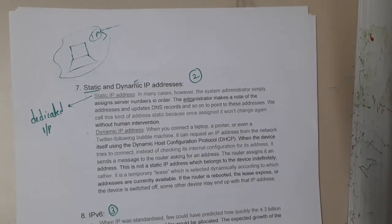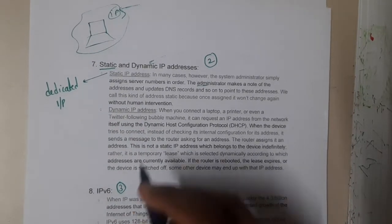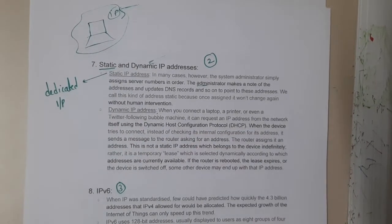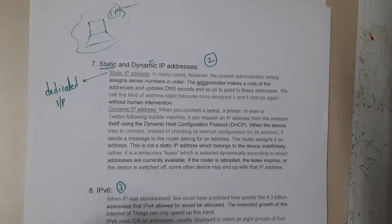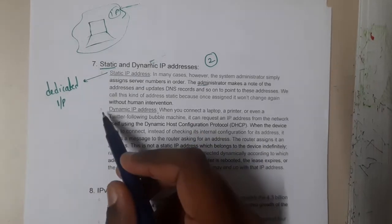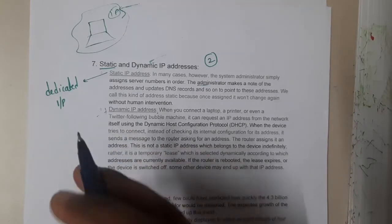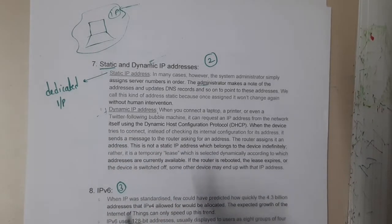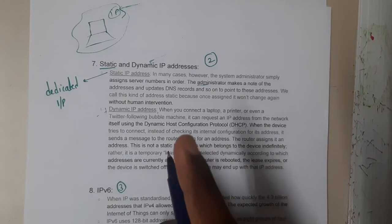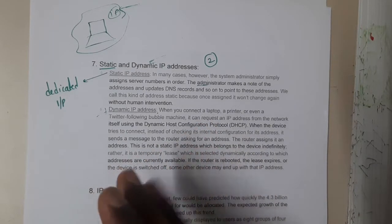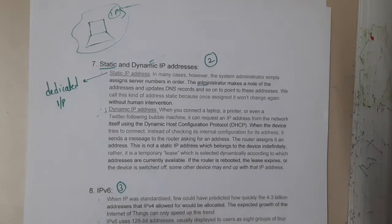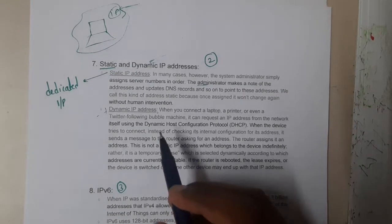Dynamic IPs, on the other hand, require no human interaction — the computer itself selects its own IP address. It is completely dynamic, meaning there is no fixed address. Today it might be one value; if you restart your system it might be new, and after some hours it might change again. So it dynamically changes over time.